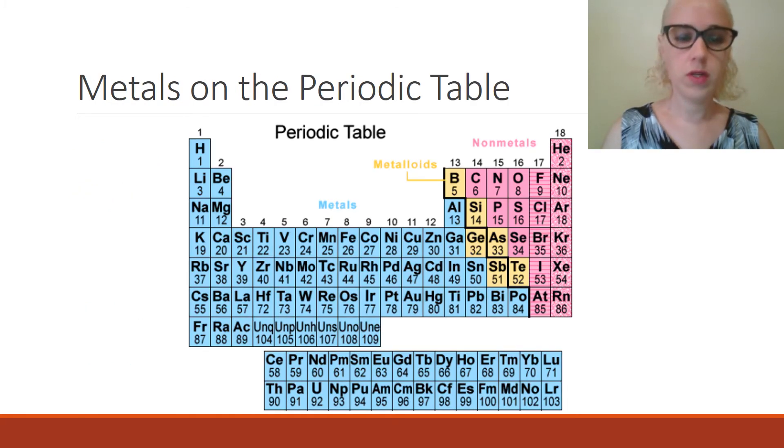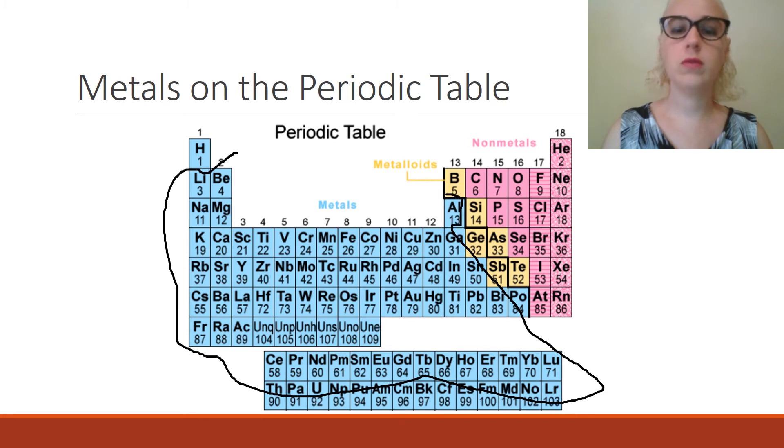Metals on the periodic table are found on the left-hand side and all the way across the middle. Hydrogen breaks a lot of rules when it comes to chemistry. Sometimes on a periodic table you'll see hydrogen here, sometimes you'll see it listed over here because it's not a metal, but it sort of behaves a bit like a metal in some ways, but it's really a non-metal. We're not going to consider that today, but I just want to explain why hydrogen's not there. So all of these ones here in blue are metals.